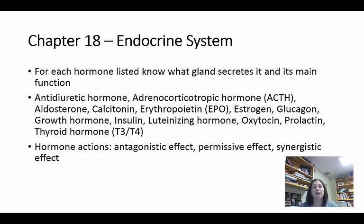Insulin is also released by the pancreas and its purpose is to lower blood sugar — when blood sugar is too high, insulin is released to lower it. Luteinizing hormone, abbreviated LH, is released by the anterior pituitary in both males and females. In females it triggers ovulation and stimulates secretion of estrogen and progesterone. In males it stimulates the secretion of testosterone.